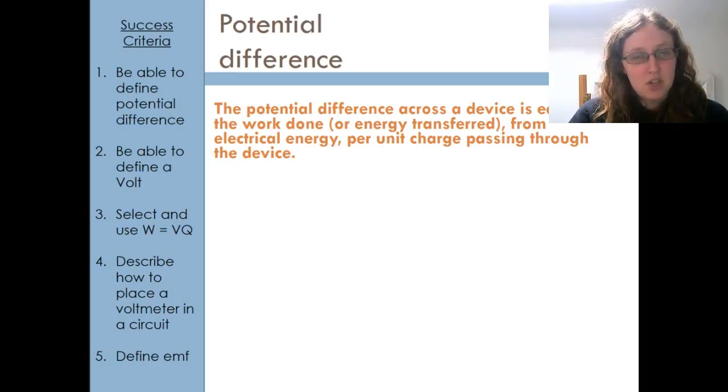So from that definition we can get to an equation. We're just going to use the symbol V because it is a type of voltage. So potential difference, which is a type of voltage, is equal to the work done per unit charge, so work over charge: V = W/Q.